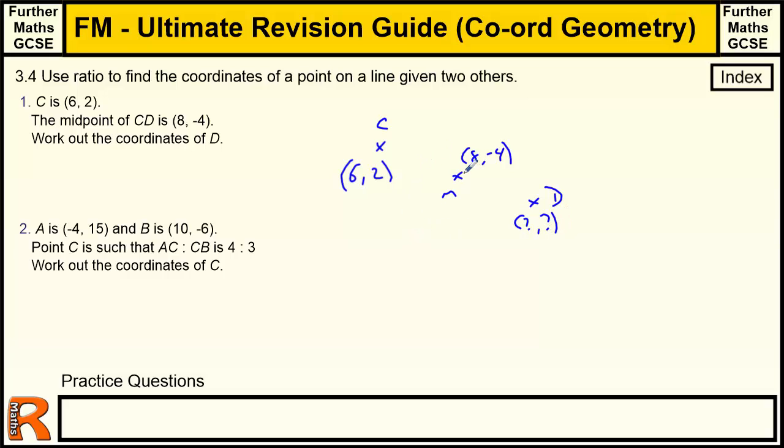So all we've got to do here, because this is the midpoint, how far across will we go? We've got to cross 2, and we've come down from 2 to -4, which is down 6. So we've just got to do that again, because it's just repeated. It's halfway. Just do it again. So we're going to cross 2, down 6. No formula required. So we're going to cross to 10, and we're coming down another 6 to -10. So the coordinates of D are (10, -10).